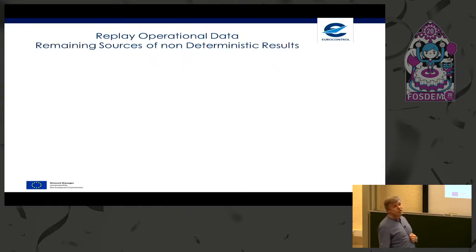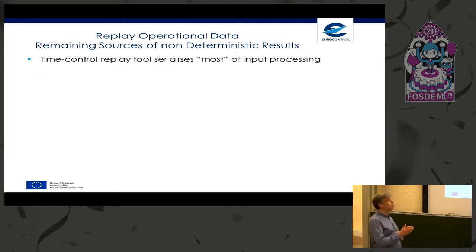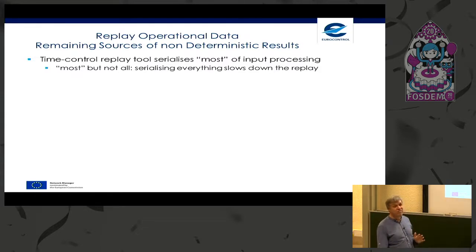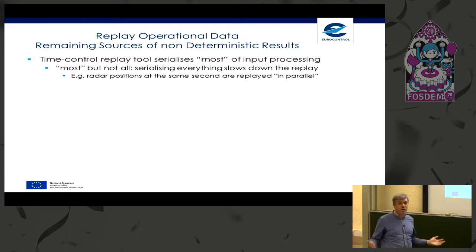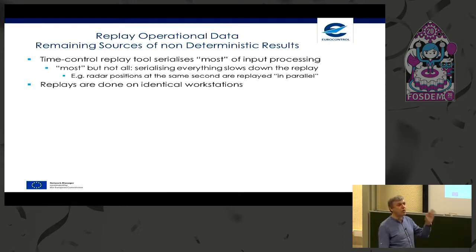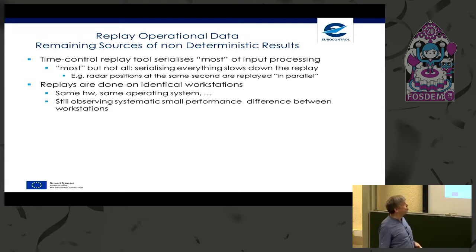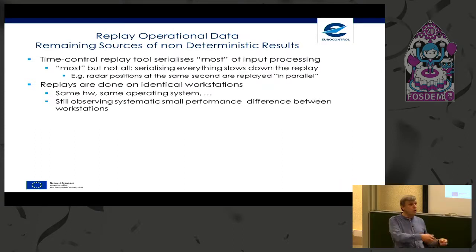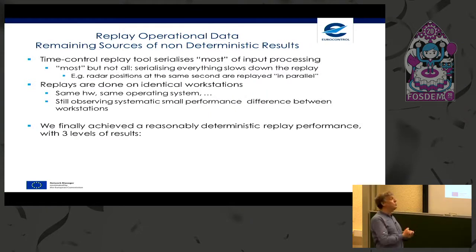We still have some remaining sources of non-determinism. The time-control tool serializes most input processing — but not all. For example, radar positions arriving at the same second are processed in parallel by multiple processes, which can introduce some non-determinism. Even on identical workstations with the same hardware, same OS, restarted from scratch, we observe differences between workstations. Our conclusion: all workstations are not born equal — small differences in CPU clock or other factors have some impact.